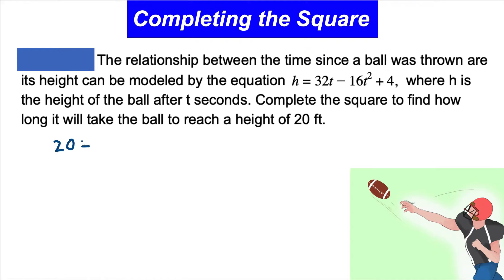The equation becomes 20 on the left side, and on the right side we write 32t - 16t² + 4.